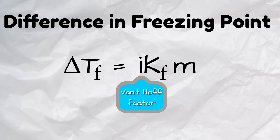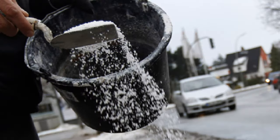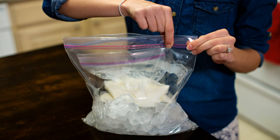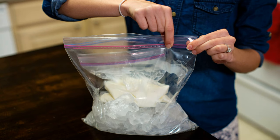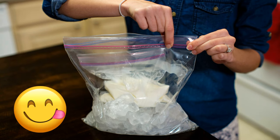Freezing point depression has interesting and useful applications in everyday life. When salt is put on an icy road, the salt mixes with a small amount of water over the ice surface and prevents freezing. If you mix salt and ice in a Ziploc bag, the same process makes the ice colder, which means it can be used for making ice cream. Yummy!